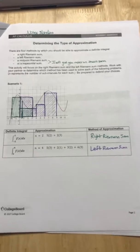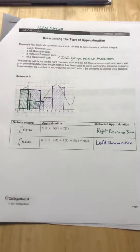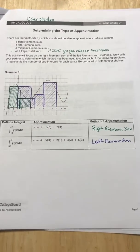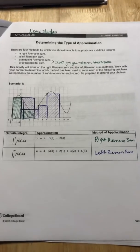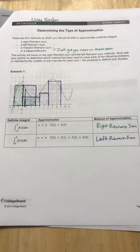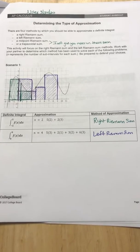So if you go to your AP classroom, I shared some documents with you on there that look like this. I'm not sure what it looks like on your end, but it says I shared them with you. I'm going to walk you through how to do this student handout, which is about determining types of approximation.